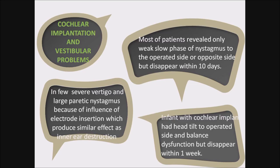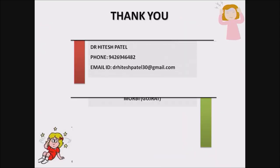Cochlear implantation and vestibular problems: most patients reveal only weak, slow-phase nystagmus to the operated or opposite side, which disappears within 10 days. In a few patients, severe vertigo and large paretic nystagmus occur because of the influence of electrode insertion, producing a similar effect as inner ear destruction. Infants with cochlear implants may have head tilt to the operated side and balance dysfunction, but it disappears within one week. Thank you.